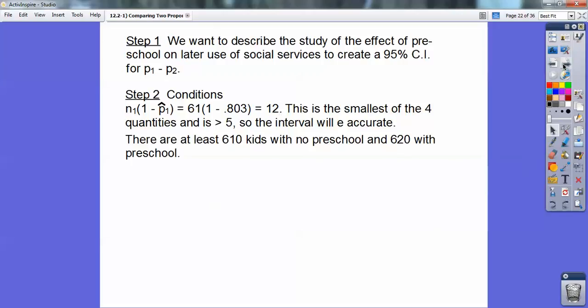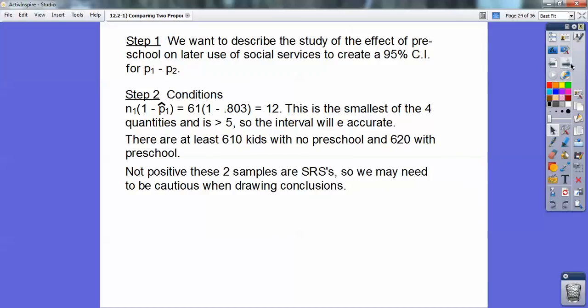And also, you guys, there's at least 10 times as many of each sample size because you had to have a population of 10 times as each sample size. So there's 61 here, so there's way more than that many kids in Michigan right there. And we're not too positive that these are sample SRSs, so we may need to draw some caution and proceed with this with caution when you're drawing your conclusions right here. Let's go ahead and carry out the procedures right here.